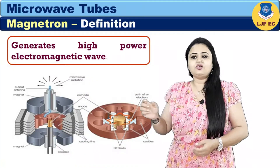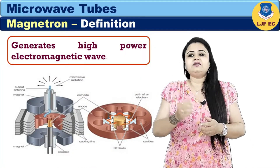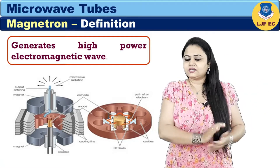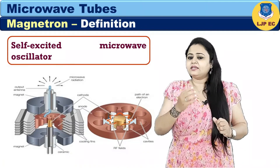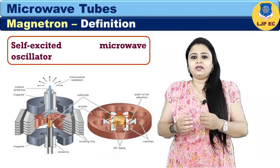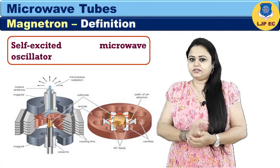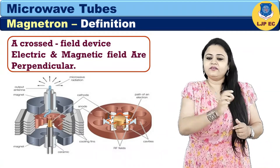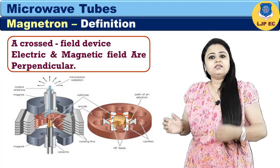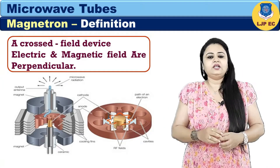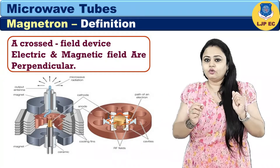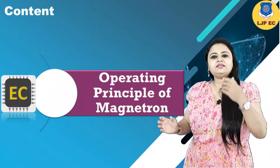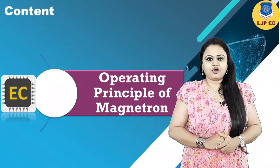A Magnetron is a device that generates high power electromagnetic waves. It is basically considered as a self-excited microwave oscillator and is also known as a cross field device, because the electric and magnetic fields produced inside the tube are mutually perpendicular to each other. Now let us see the operating principle of Magnetron.